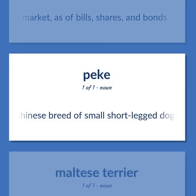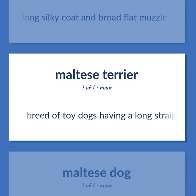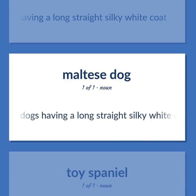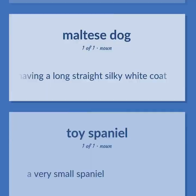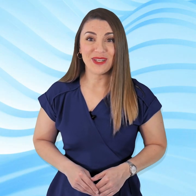Toy dog breeds: A Chinese breed of small short-legged dogs with a long silky coat and broad flat muzzle. Breed of toy dogs having a long straight silky white coat. A very small spaniel. Become our student and get access to effective and free educational materials. Subscribe to our YouTube channel to become a part of our growing community and to learn English effectively.